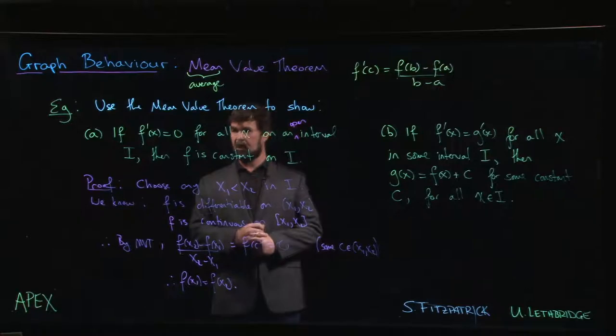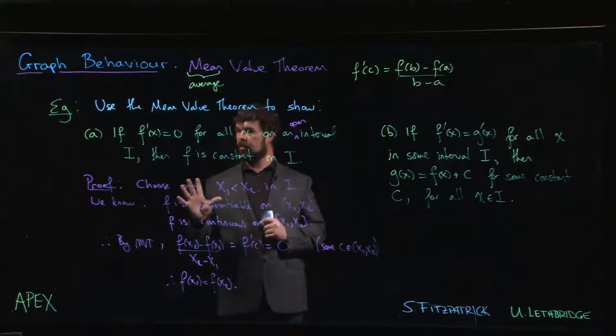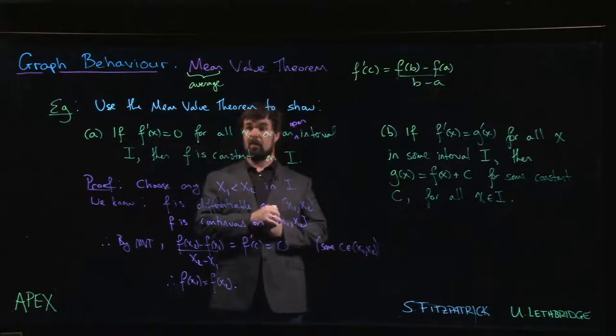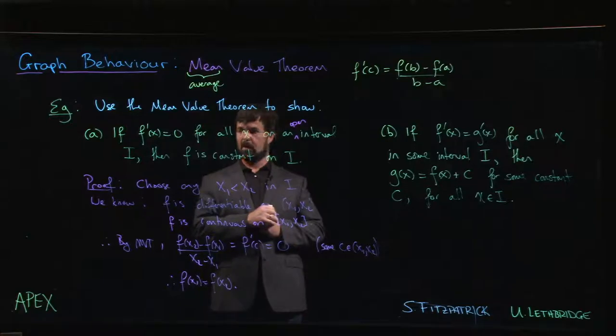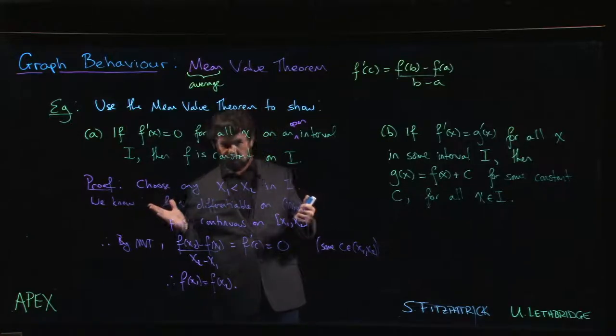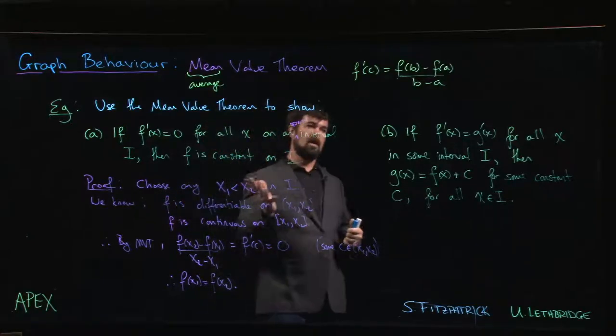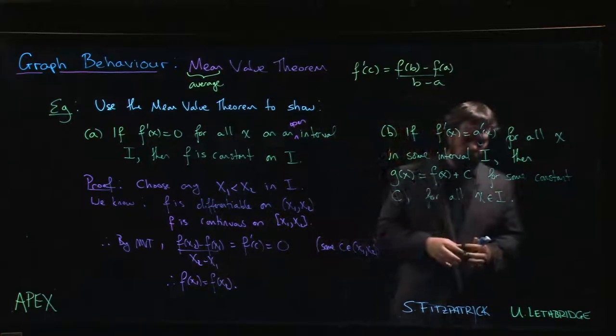We've established that using the mean value theorem, if we know the derivative is equal to 0 everywhere on an interval, a function has to be constant on that interval. This second result is actually quite important.